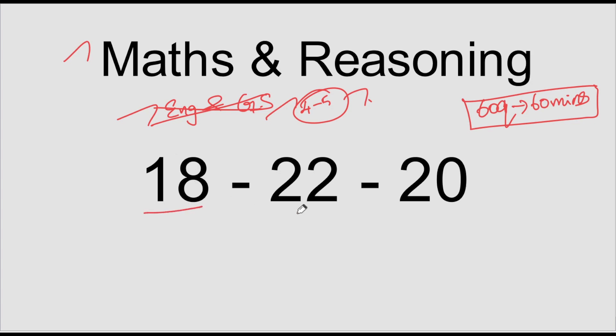The 18-22-20 rule — if you try it, it will improve your attempt. I have a separate video on this which I will upload. The rule helps you approach Max Reasoning in a structured way. If you try it and skip the difficult ones, you will be able to maximize your score in reasoning.